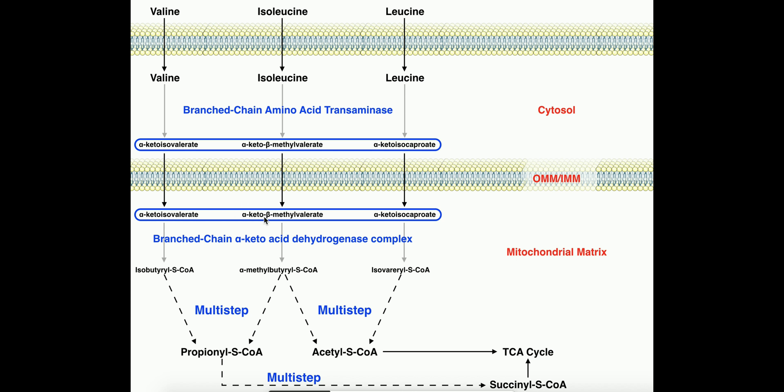Now, once these alpha-keto acids have been transported into the mitochondrial matrix across both the outer and inner mitochondrial membranes, they're going to react with this enzyme, which is actually linked to the inner mitochondrial membrane, and it's actually called the branched chain alpha-keto acid dehydrogenase complex. In fact, it's mechanistically identical to the alpha-ketoglutarate dehydrogenase complex of the TCA cycle.